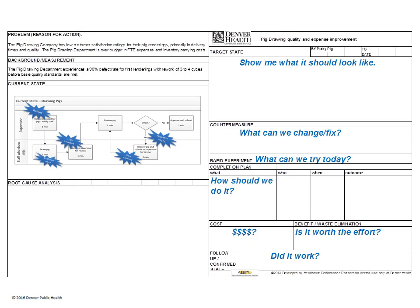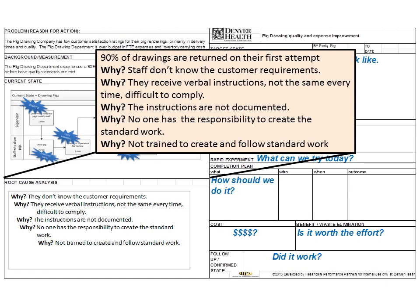Next, we use the problem statement, observations, and Kaizen burst areas to identify the root cause. One way to do this is the Five Whys activity. For the Pig Drawing Company: 90% of drawings are returned on the first attempt — why are staff making errors? Potentially staff don't know the customer requirements. Why don't they know the requirements? Because they receive verbal instructions from supervisors that are inconsistent. Why verbal instructions? Because instructions are not documented anywhere. Why not documented? No one created the standard work. Why? No one knows how to create the standard work. Once the root cause appears clear, actionable, and within scope, you can move on.